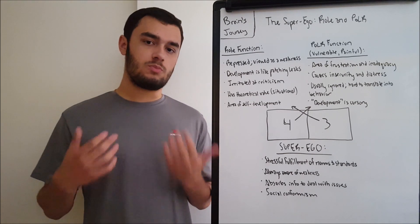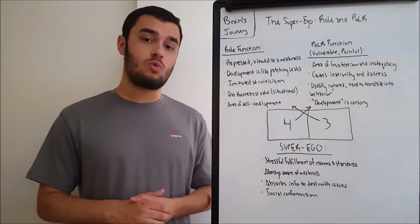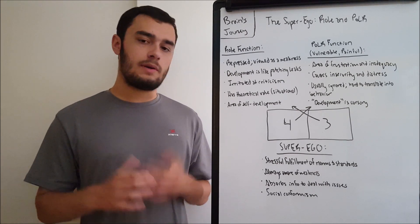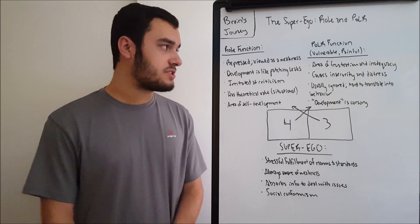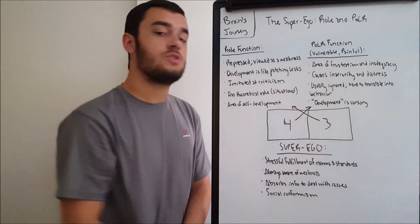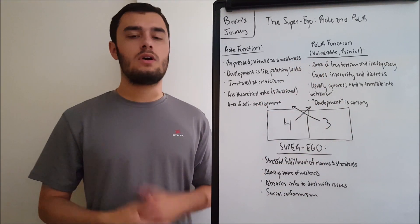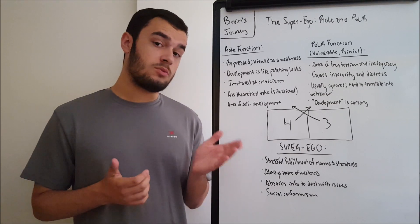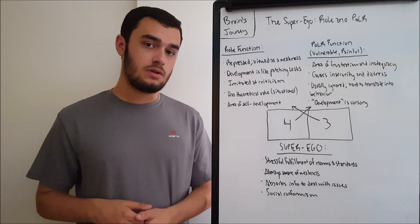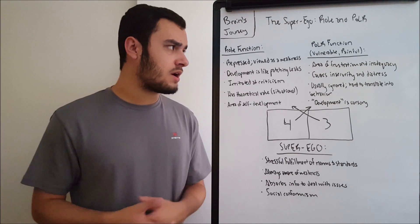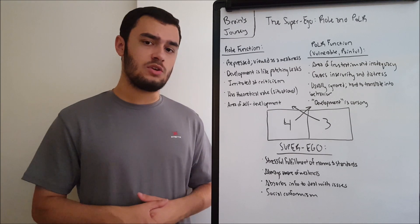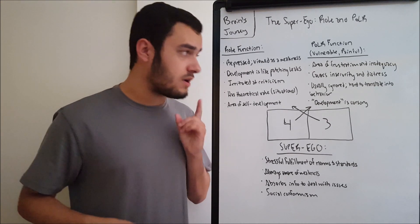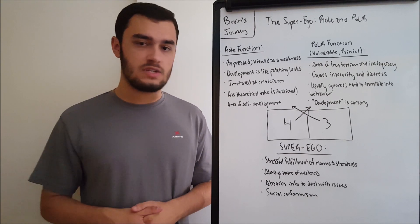How about the polar function? The polar function is quite different. Polar stands for point of least resistance, so you can already get an idea of what this function is all about. It's also called the vulnerable or the painful function — not very good names. You're not going to expect something good out of this function, and you'd be right, because it is an area of frustration and inadequacy.